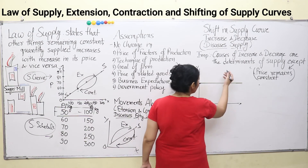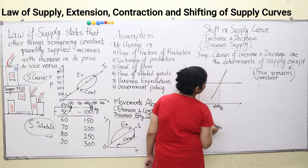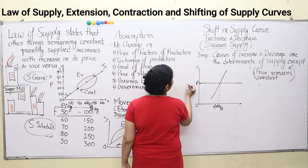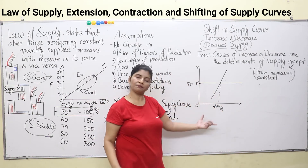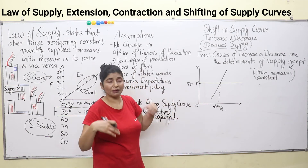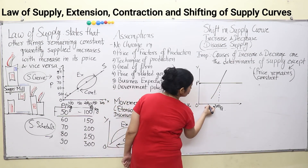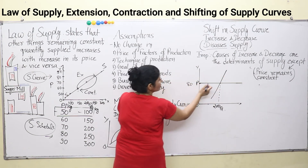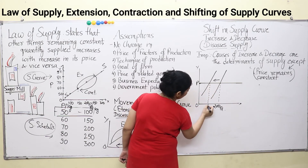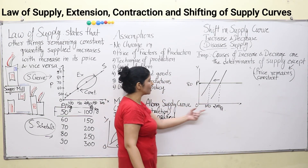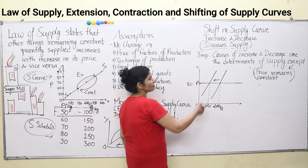We can see over here: initially your supply curve was S1, and you were supplying 200 kg of sugar per day at a constant price of Rs. 80 per kg. If the factors of production become expensive, you will decrease your production, and what will happen? Your supply curve will shift towards the left — that means a decrease in supply. Now the quantity has decreased from 200 kg to 100 kg. Your supply has decreased and your supply curve has moved leftward — this is known as a decrease in supply.